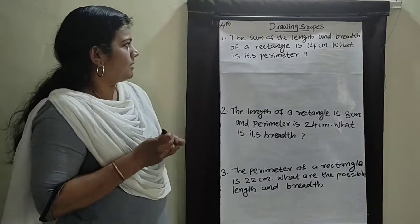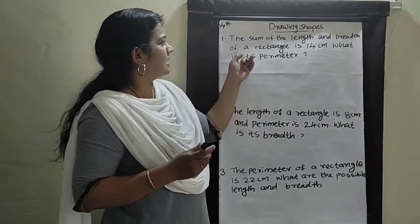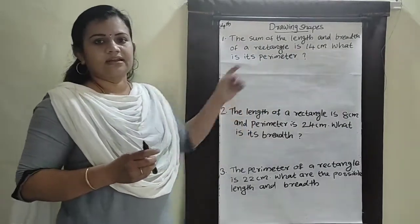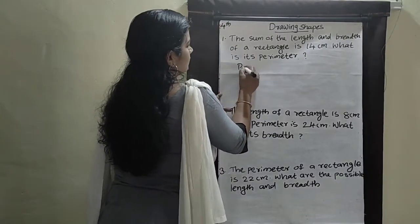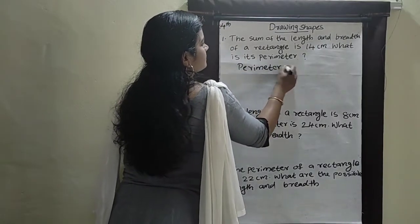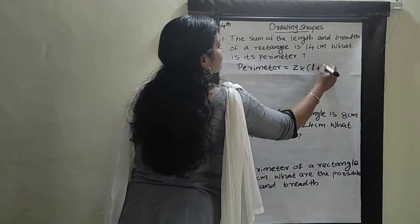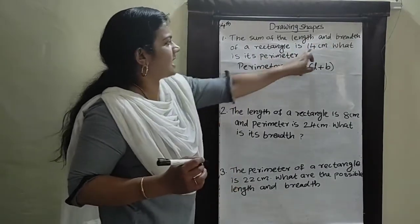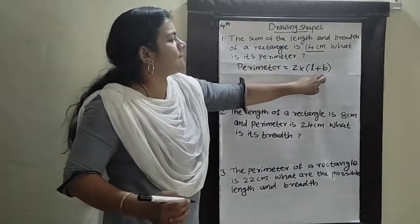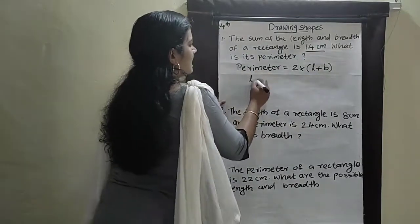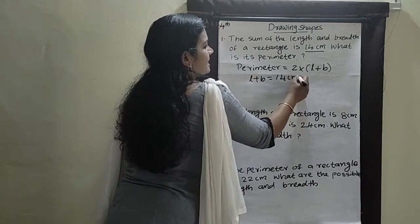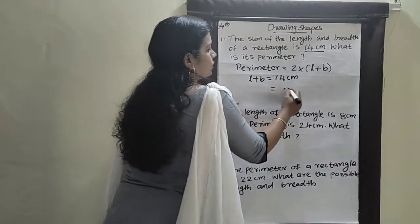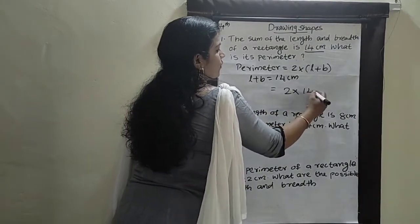What is the first problem? The sum of the length and breadth of a rectangle is 14 centimeters. What is its perimeter? We already know that the perimeter is equal to 2 into length plus breadth. The sum of the length and breadth is 14 centimeters. This sum is given — L plus B is equal to 14 centimeters. Then applying this equation, we can write 2 into L plus B is 14.